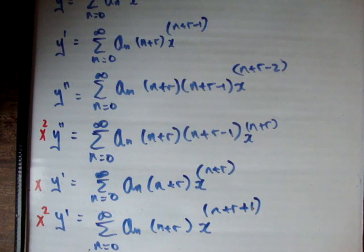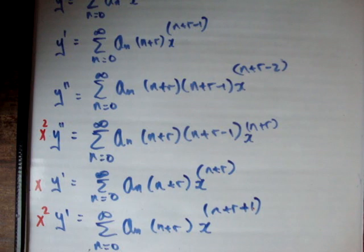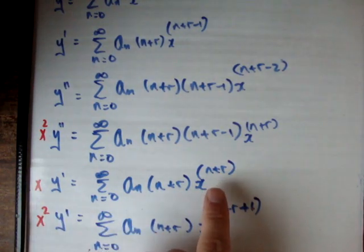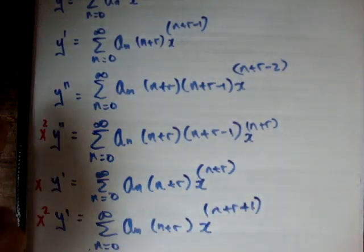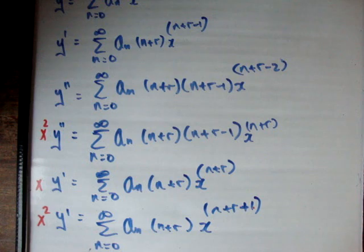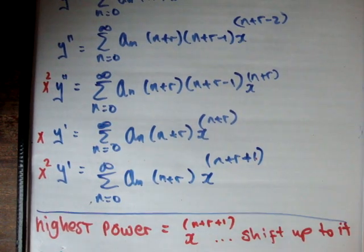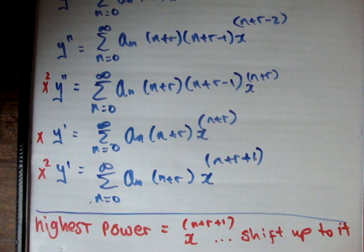Now we look and see where our series begin and what their powers are. These two powers aren't the same. However, the power in x times y prime, the power in x squared y double prime, and the power in y are all x to the n plus r. That would suggest shifting x squared times y prime downwards, but I find it more difficult to do that. So I will always suggest that you move up to the highest power. It doesn't matter how many other terms you have to change as a result.